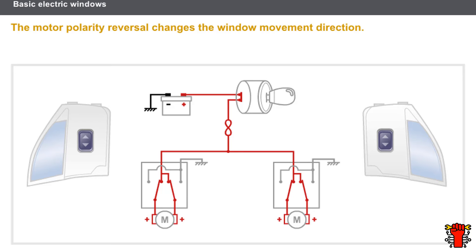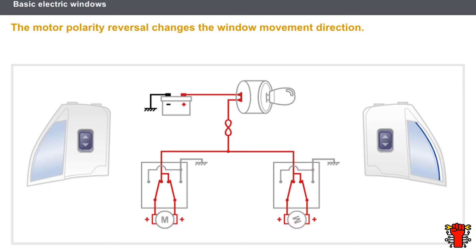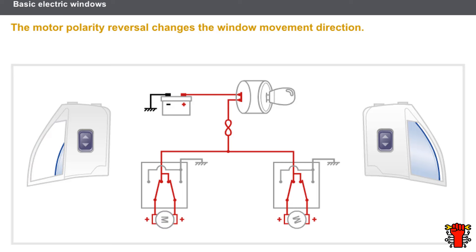When the switch is activated, the motor receives a different potential to that when it is locked in the rest position. The motor operating direction and the window movement depend on which way the switch is moved. This movement difference is called motor polarity reversal.